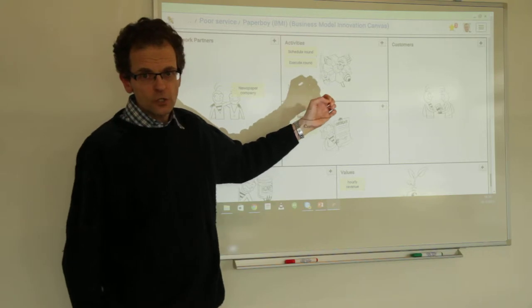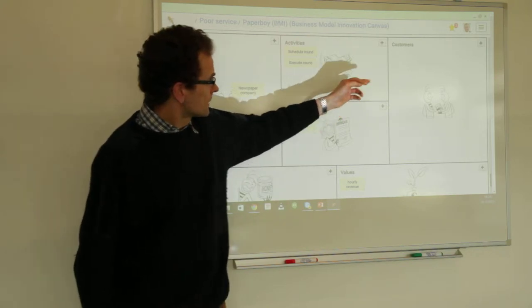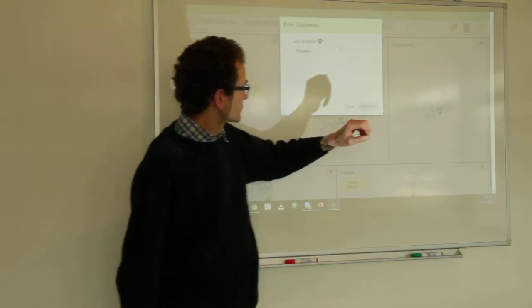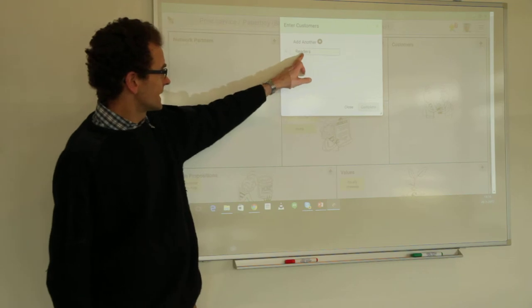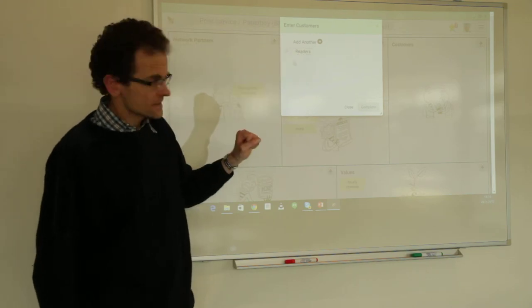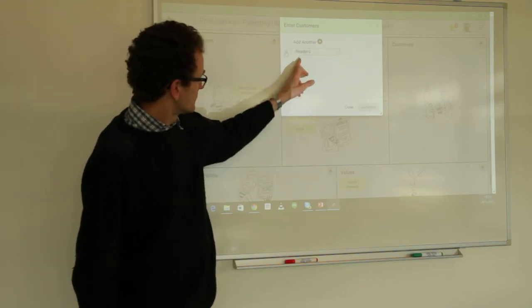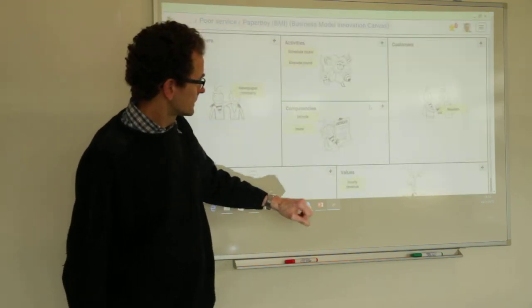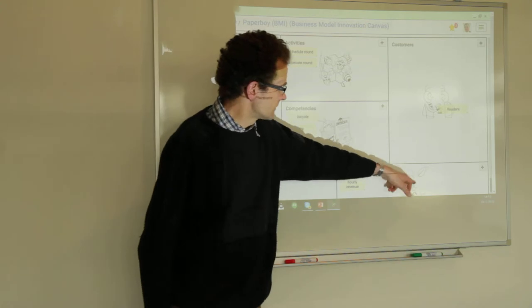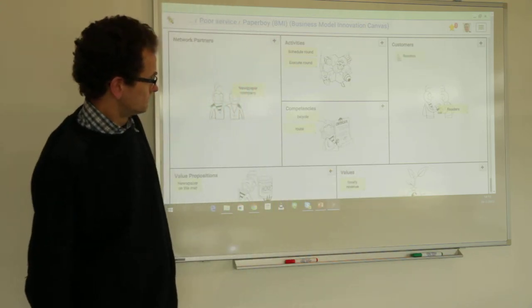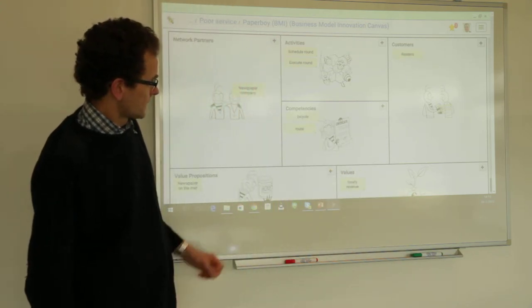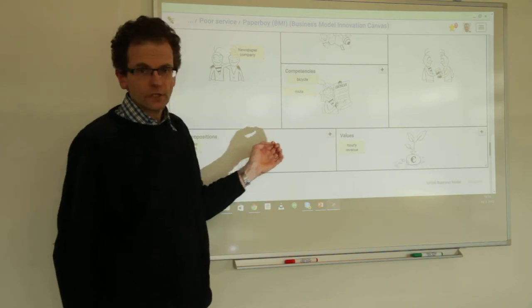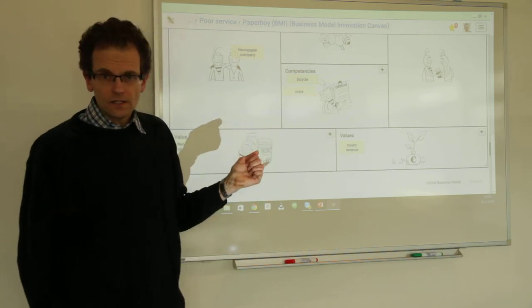To show you how it works, let's open the customers section. We do the same for customers — we select the existing readers, select it, copy it. And now we are as far as we got via the business model canvas.